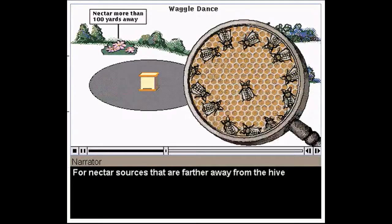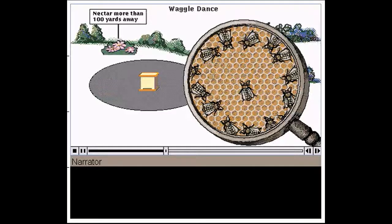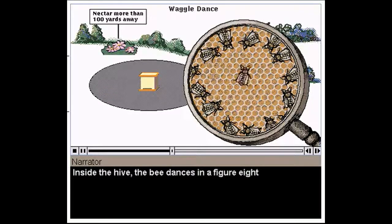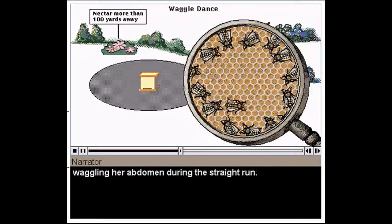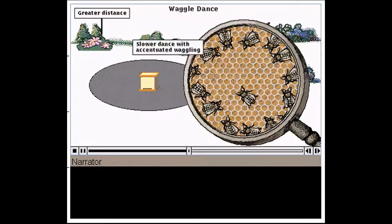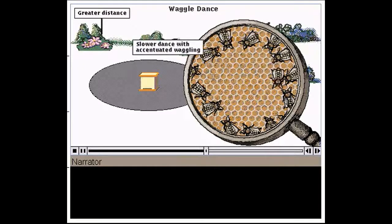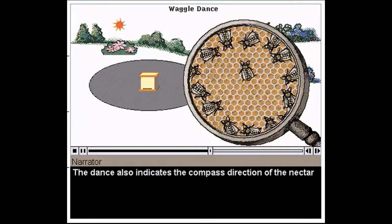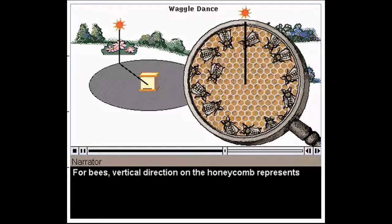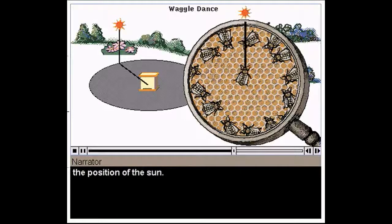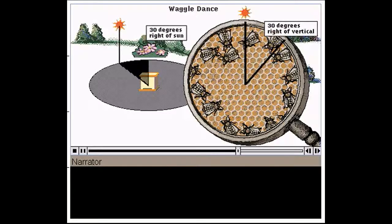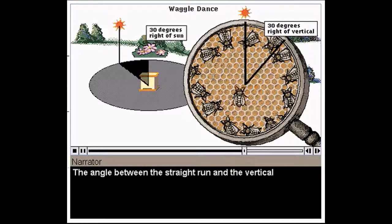For nectar sources that are farther away from the hive, the bee does a waggle dance. Inside the hive, the bee dances in a figure eight, waggling her abdomen during the straight run. The dance indicates the precise distance to the nectar. The dance also indicates the compass direction of the nectar relative to the sun. For bees, vertical direction on the honeycomb represents the position of the sun. The angle between the straight run and the vertical equals the angle of the nectar from the sun.